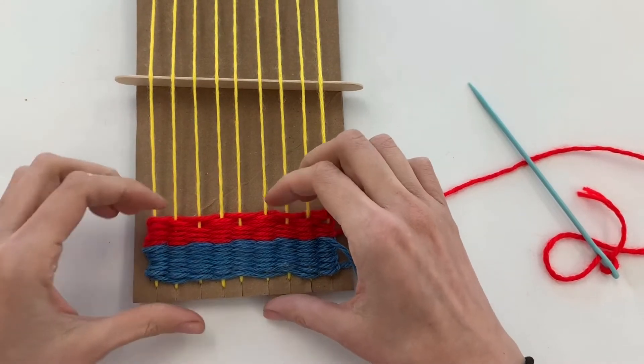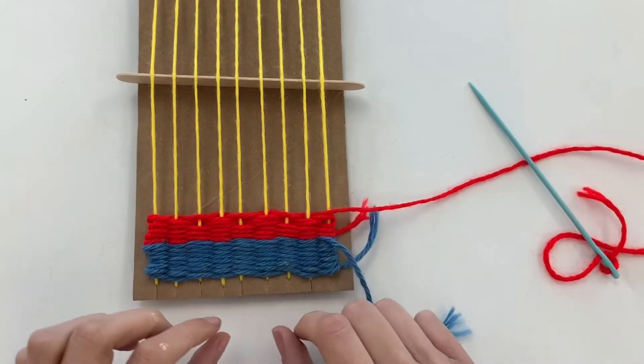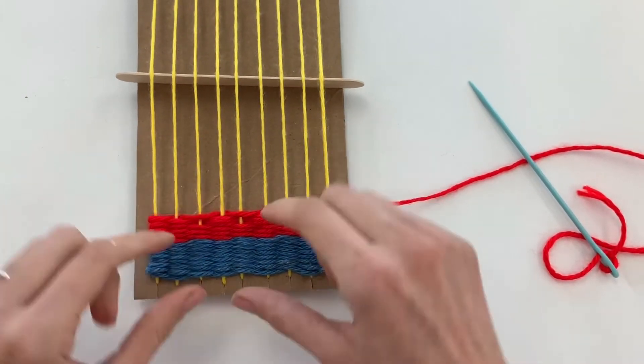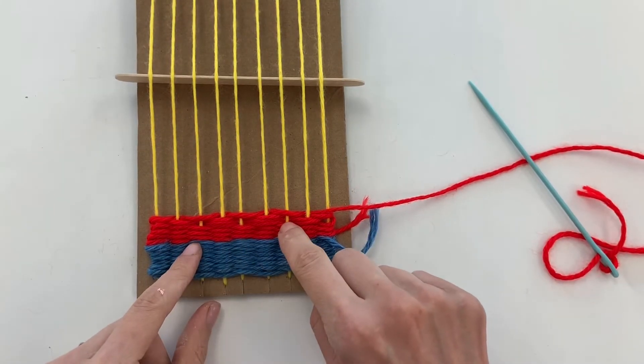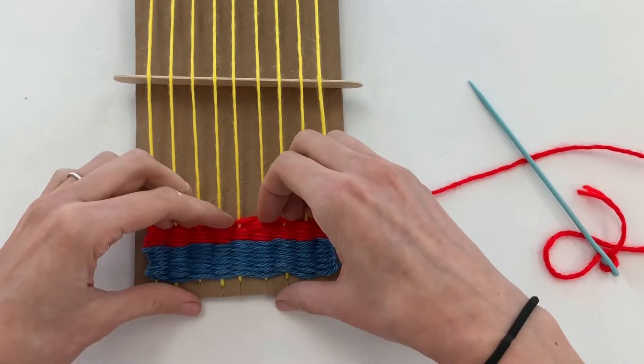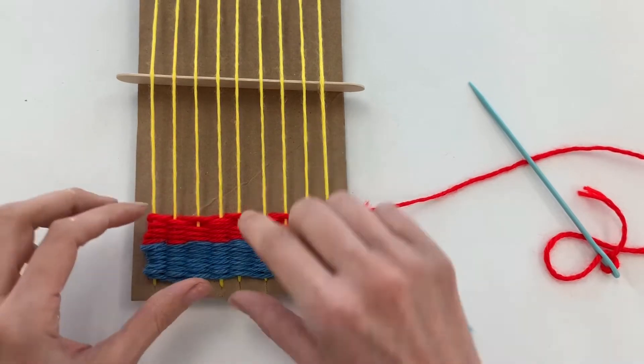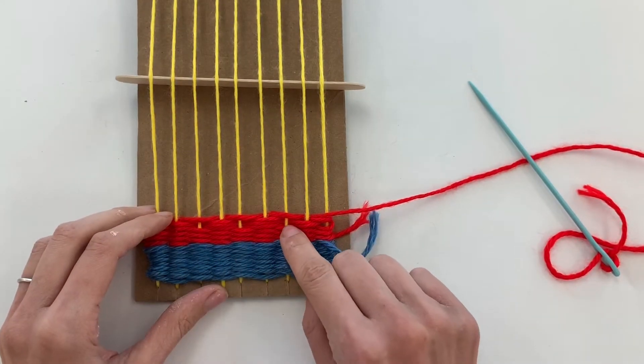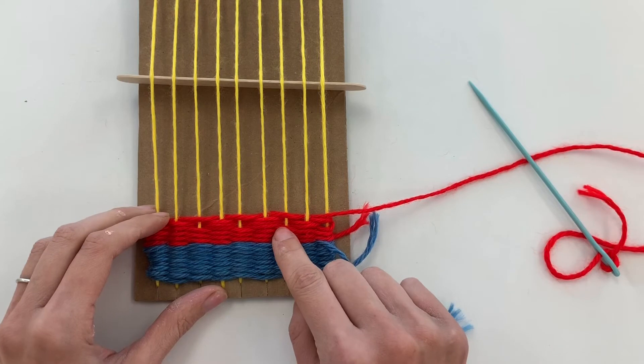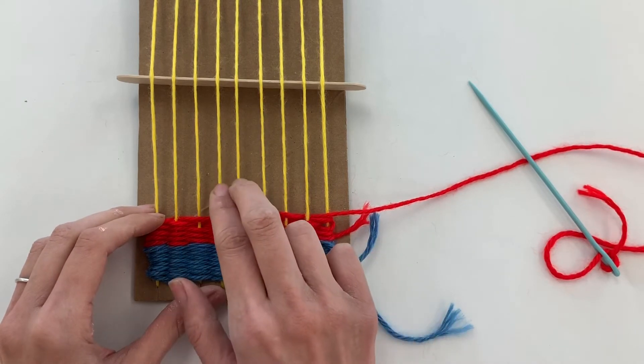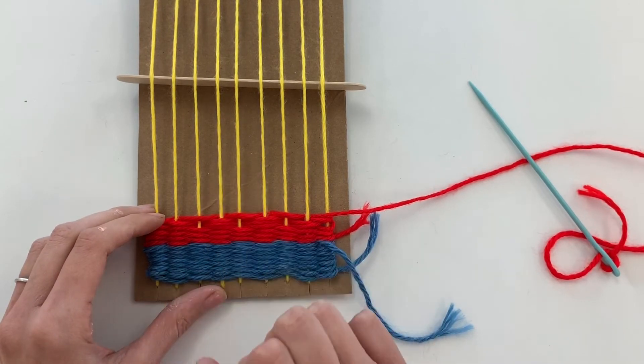Now as I was weaving, I noticed that there may have been a mistake here. When I went to go press it down, I can see that every other warp string here shows through, and no matter how hard I press it down, I can still see it. If you see something like this, what that means is that you may have accidentally gone over or under two of these at a time by accident.